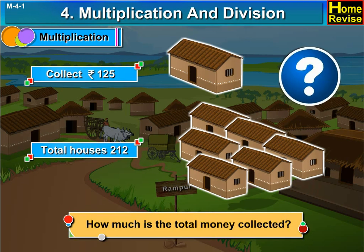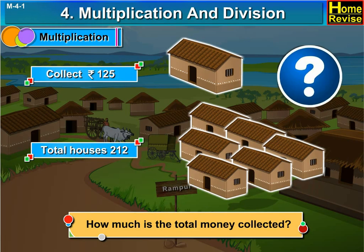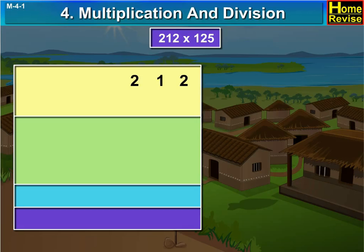So, how much is the total money collected? Students, here we need to multiply total number of houses to the money collected per house. So, let us multiply 212 by 125.